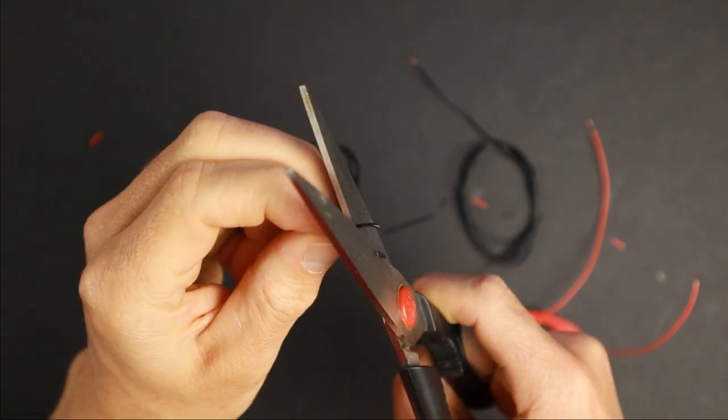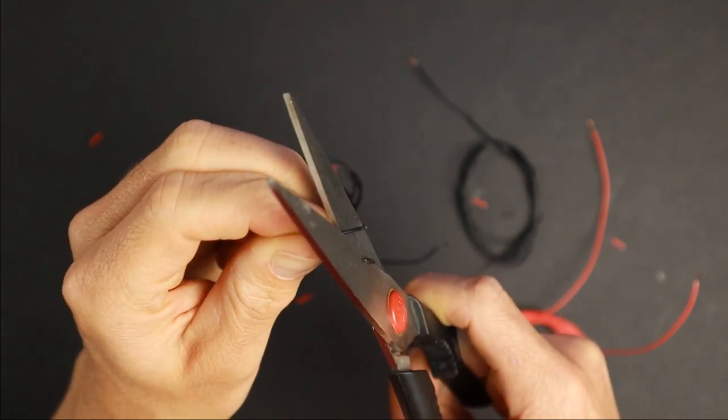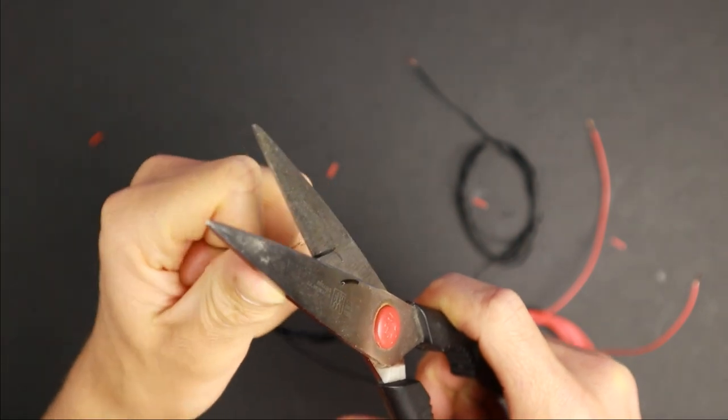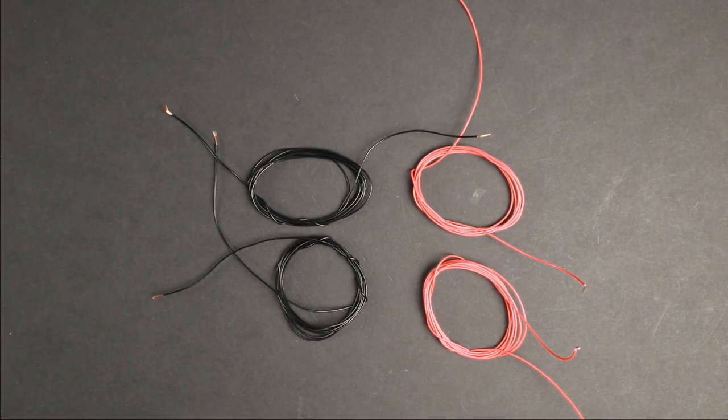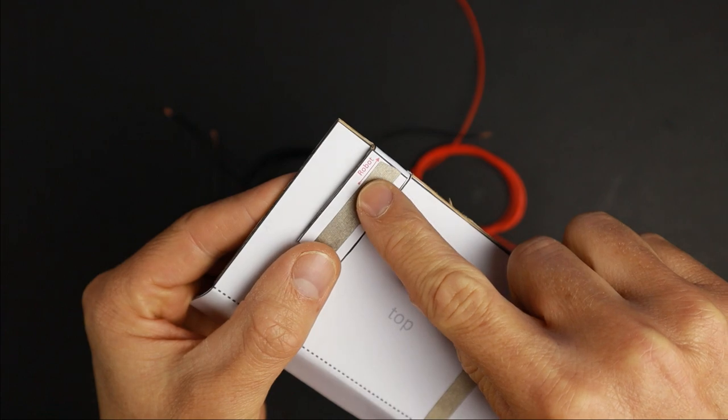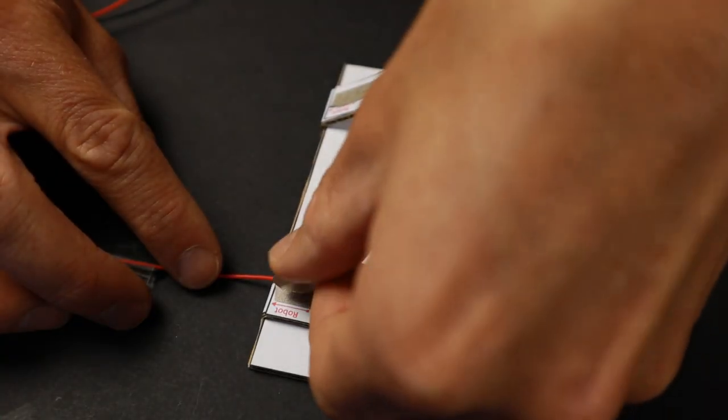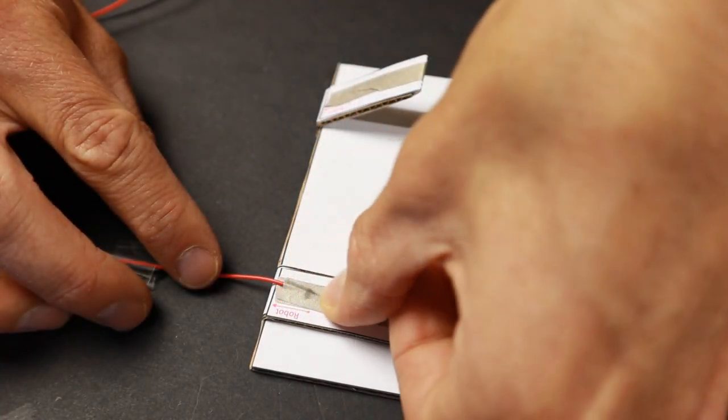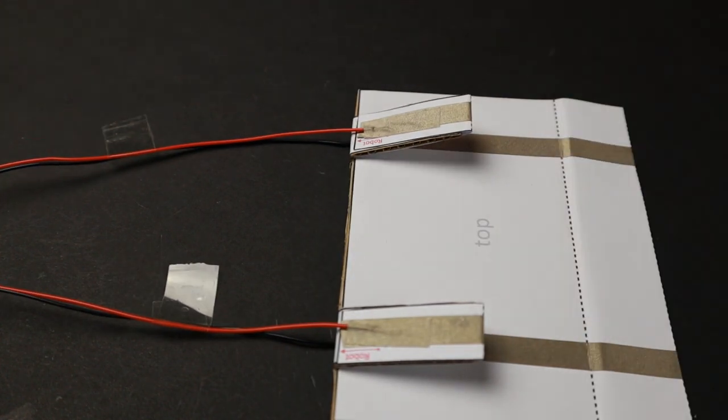Now prepare two black and two red wires of about one and a half meter length. Strip the wires at the end. Wire strippers help here. There are markings where to attach the wires with some conductive tape. Keep the two wires for each motor together.